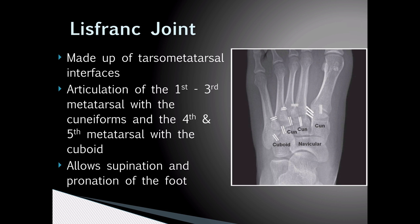This joint allows for supination and pronation of the foot. The second metatarsal forms the keystone of this complex and is essential to stability. The second metatarsal is held firmly in place by its tarsal-metatarsal ligament, the inter-metatarsal ligament, and the strong Lisfranc ligament. Understanding its anatomical relationships will become very important later on when we discuss evaluating this joint for injury.